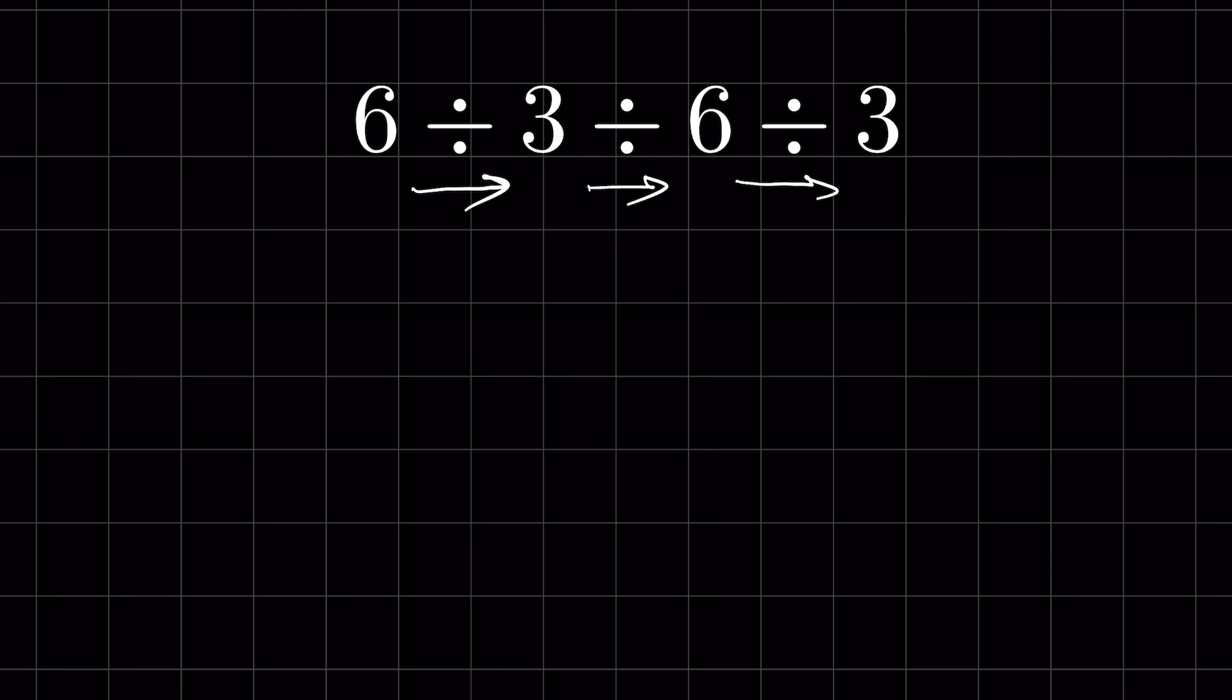Or we can do the divisions by converting them into multiplication. Now when we convert division into multiplication, the number after that gets inverted. When 6 divided by 3 means 6 is multiplied to 1 upon 3, then you can leave as it is.